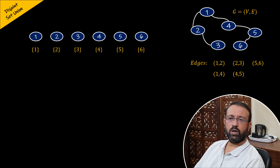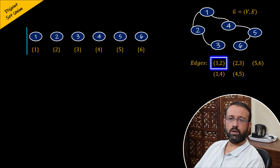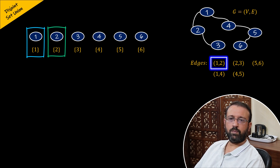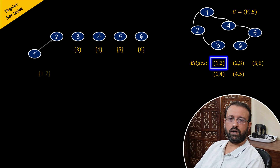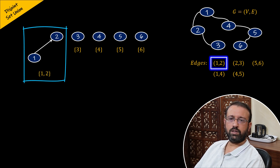We have an edge between vertex one and vertex two. Now we need to find whether vertex one and vertex two are in different sets. Vertex one belongs to set one and vertex two belongs to set two, so they are in different sets. Therefore, we will perform union of set one and set two. After the union operation, both vertices one and two will be in the same set.